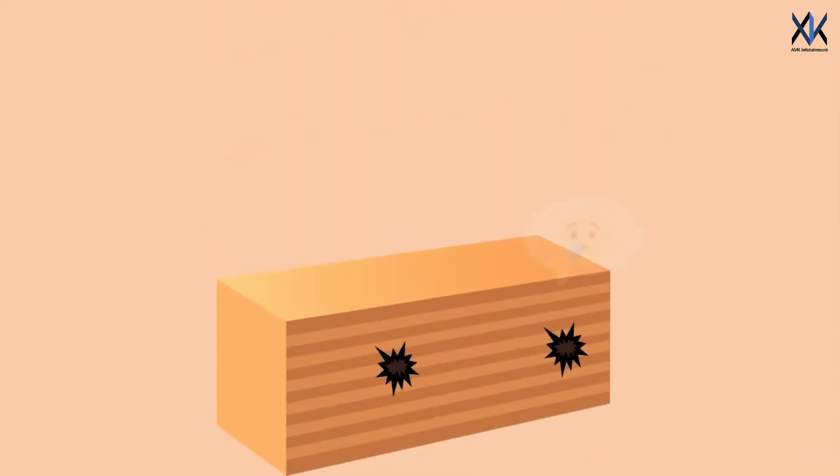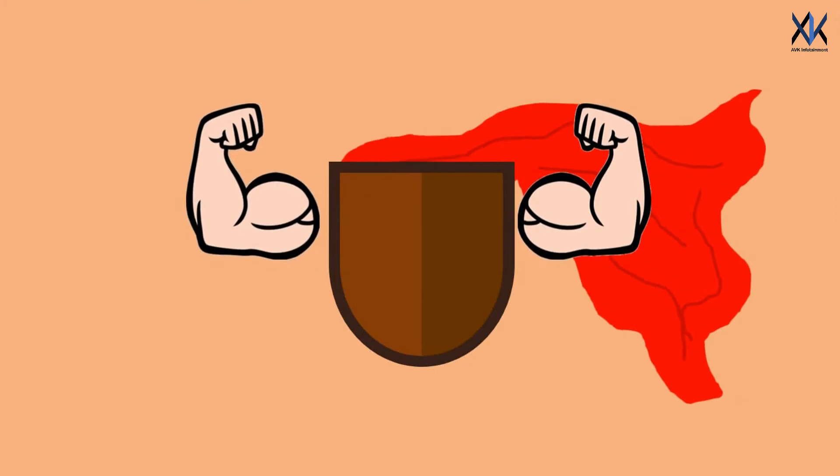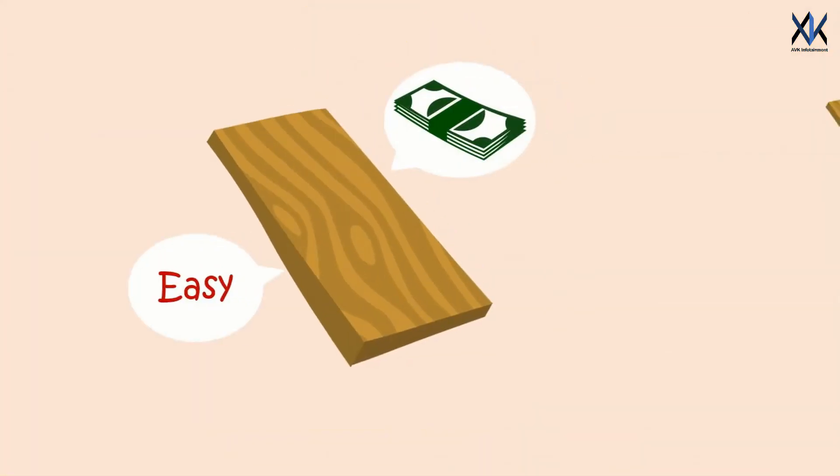But if you want to stop a bullet, we wouldn't recommend jumping behind a plywood barrier. For that, you'll need super wood. Super wood, surprisingly, is very easy and cheap to create.